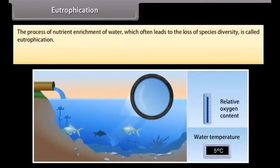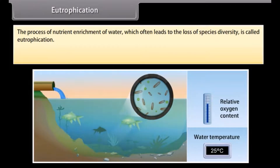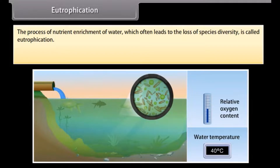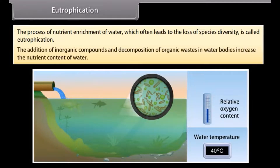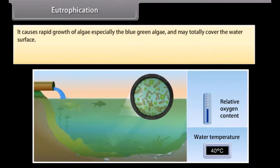Eutrophication is the process of nutrient enrichment of water, which often leads to the loss of species diversity. The addition of inorganic compounds and decomposition of organic wastes in water bodies increase the nutrient content of water, causing rapid growth of algae, especially blue-green algae.